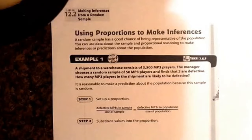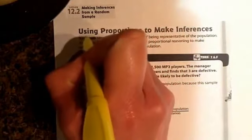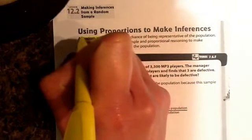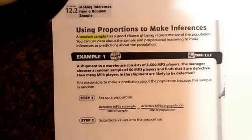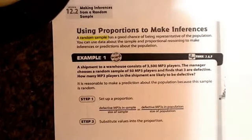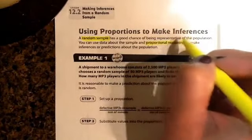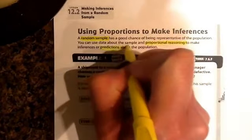A random sample has a good chance of being representative of the population. We talked about random samples in the last video, and because it's random, we can use it to set up a proportion and use proportional reasoning to make predictions about the entire population.